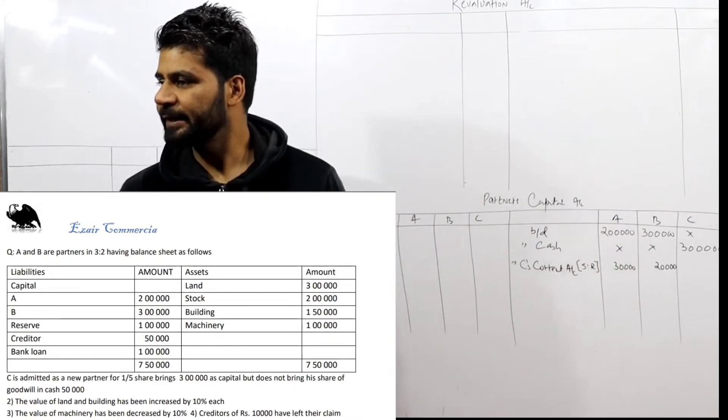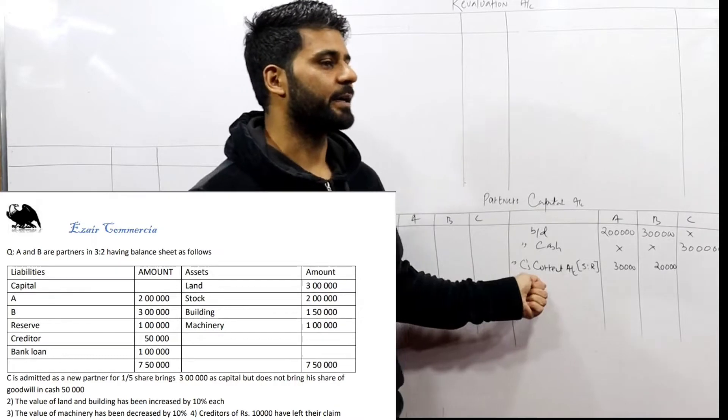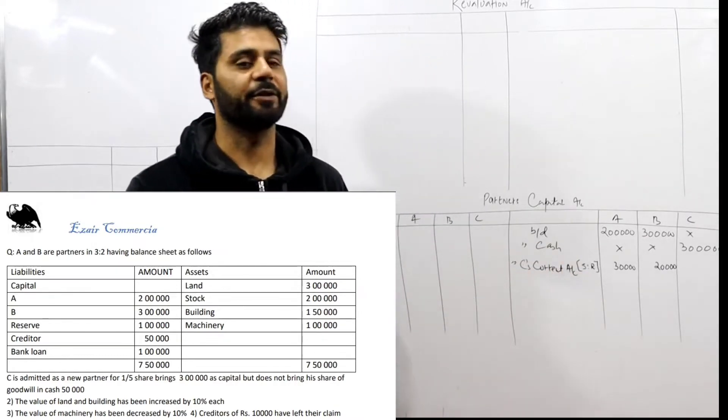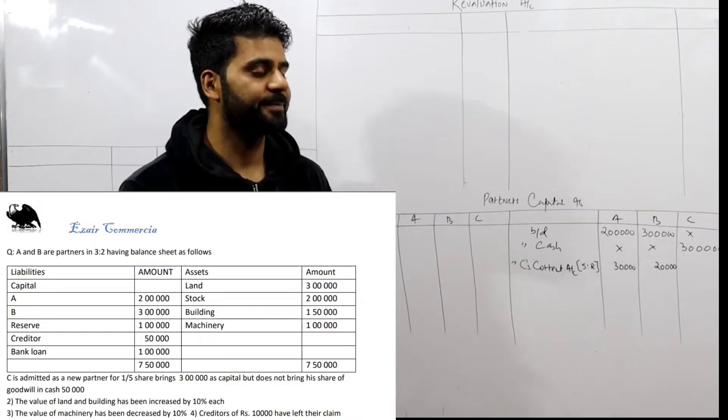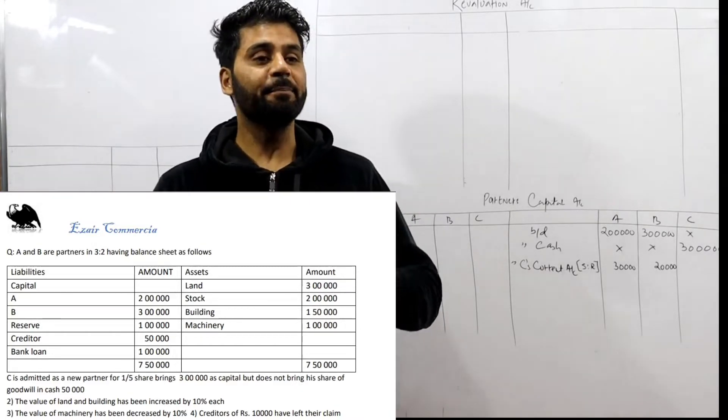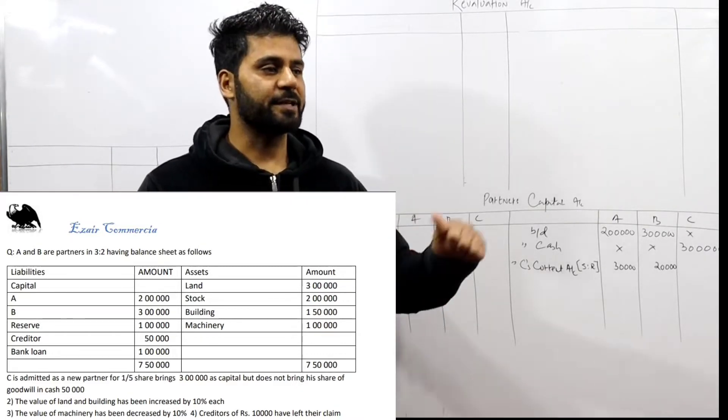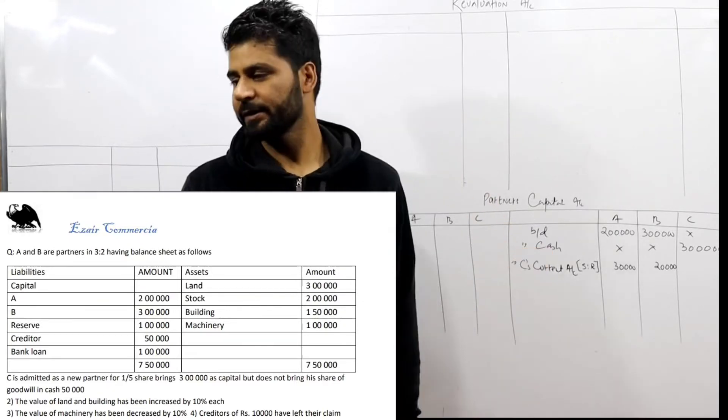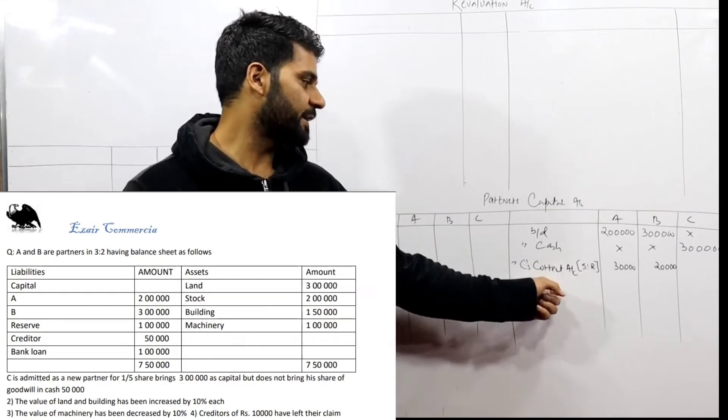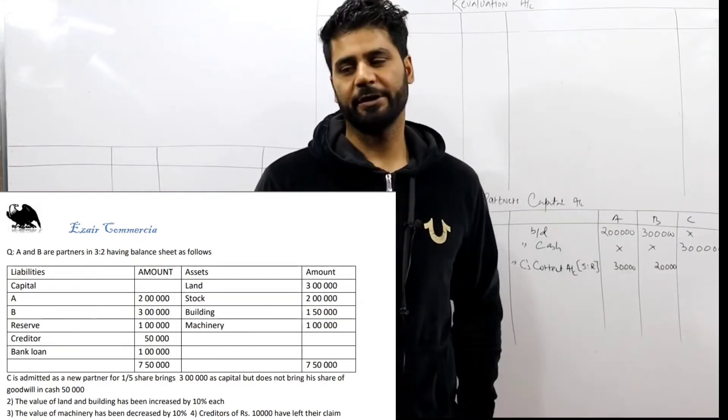Simple. When it's not premium, then we will deduct it from the current account. Are you getting my idea? When the new partner doesn't have share of goodwill, then we deduct it from the current account. So C's current account is 30,000 and 20,000.